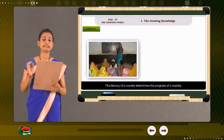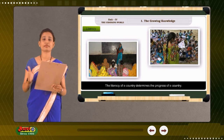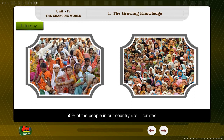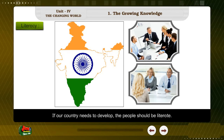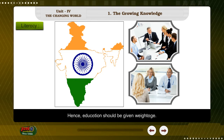The literacy of a country determines its progress. Many countries have high literacy percentages. However, 50% of the people in our country are illiterates. If our country needs to develop, the people should be literate. So it is said that education is the key to progress, and hence education should be given great weightage.